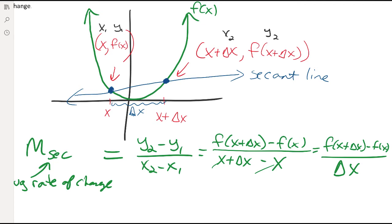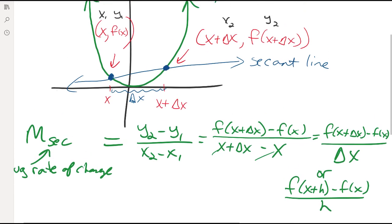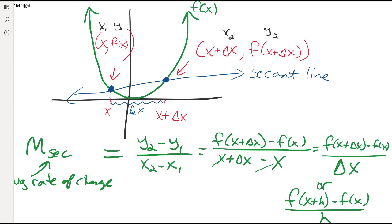You've actually seen this formula before in previous algebra classes. Instead of using delta x, they probably used a different letter — we call these dummy variables, you can use whatever letter you want. If you use h instead, the average rate of change becomes f(x + h) minus f(x) all over h. This is called the difference quotient. To find the average rate of change is just the same as finding the slope between two ordered pairs.